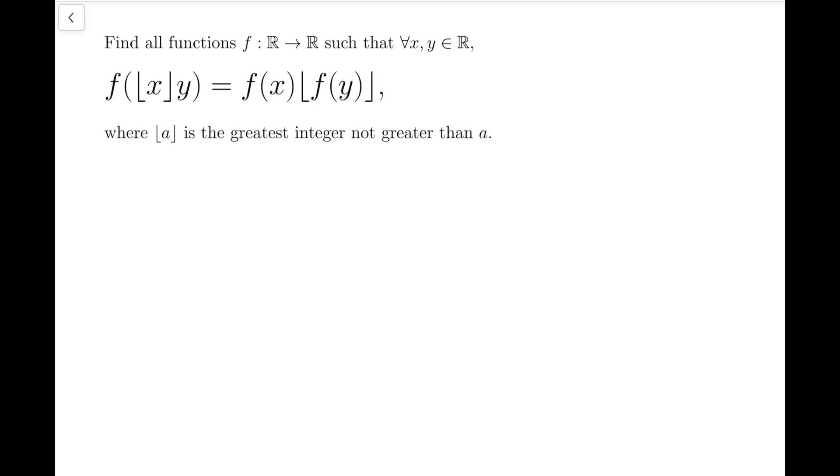This problem is a very standard functional equations problem, and can be done by simply putting some appropriate values into x and y. So the first step is to put both x and y to be 0. Then f of the floor function of 0 times 0 equals f of 0 times the floor function of f of 0.